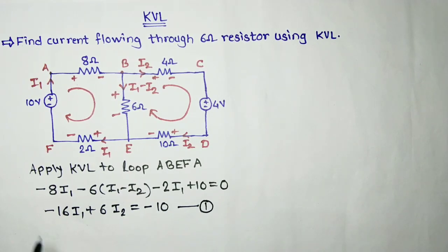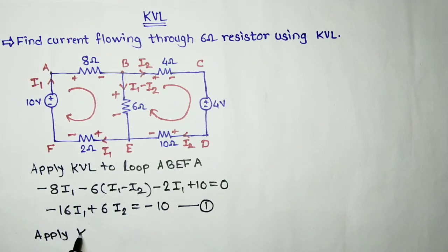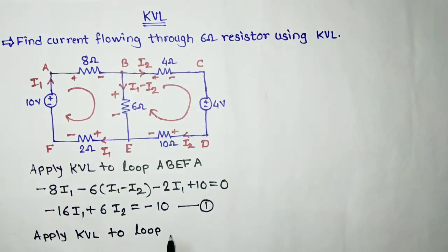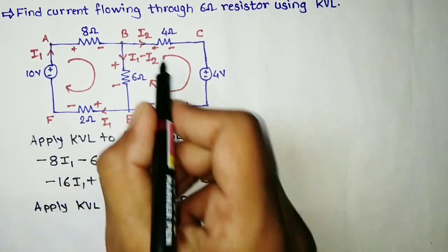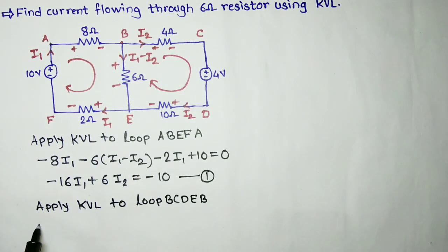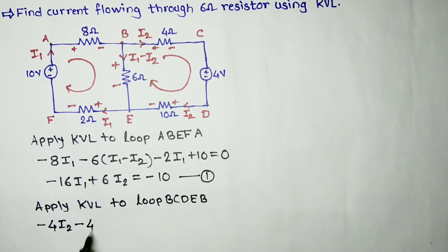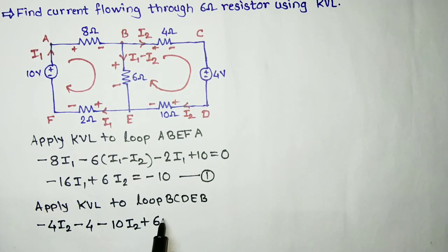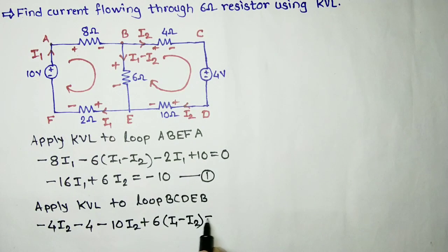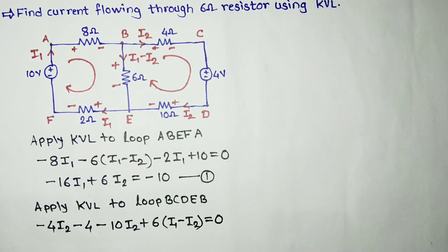Now apply KVL to loop B-C-D-E-B. Moving from B to C, the second sign for the 4-ohm resistance is negative, so minus 4 times I2. Then minus 10 times I2 for the 10-ohm resistance. The second sign for the 6-ohm gives plus 6 times (I1 minus I2), and we have returned to point B.